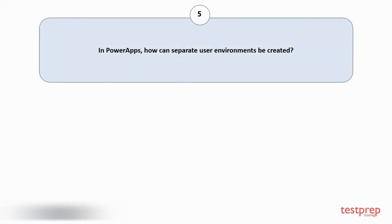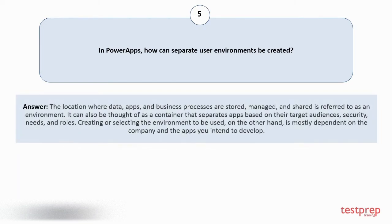Question number 5. In Power Apps, how can separate user environments be created? The location where data, apps, and business processes are stored, managed, and shared is referred to as an environment. It can also be thought of as a container that separates apps based on their target audiences, security needs, and roles. Creating or selecting the environment to be used is mostly dependent on the company and the apps you intend to develop.